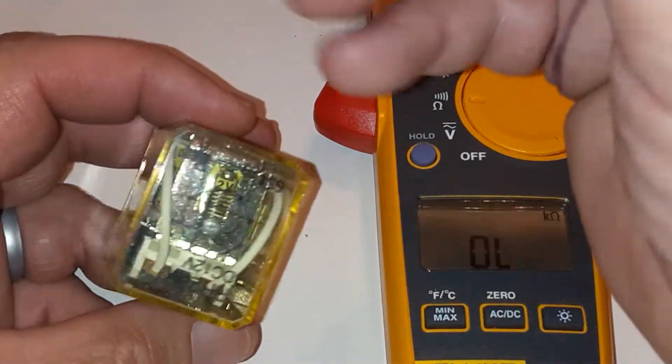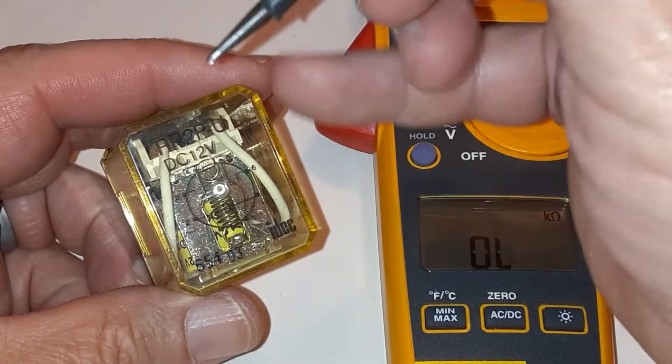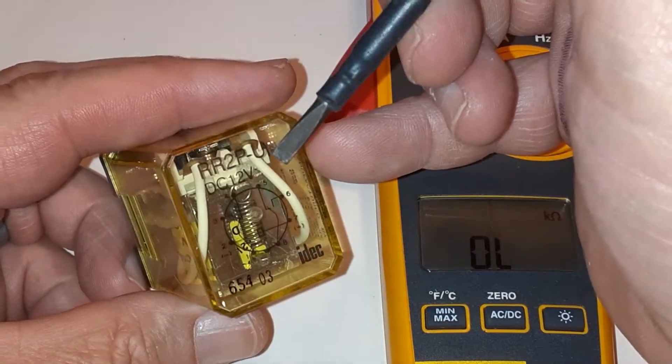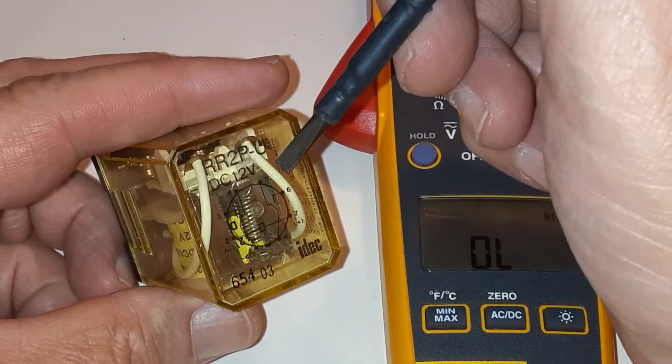If you notice on top of the relay, you have a little bit of information. It's always difficult to read though - you have to catch the light just right. There's the part number, the relay part number.